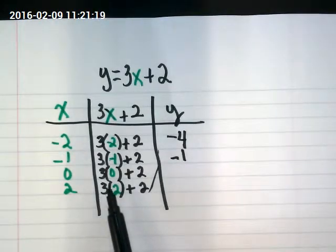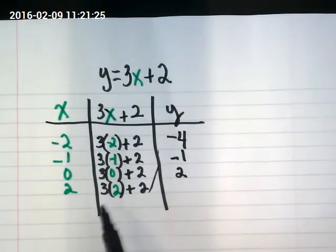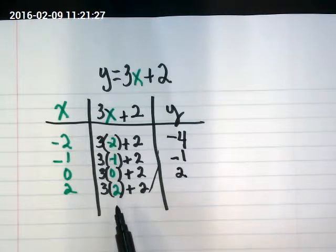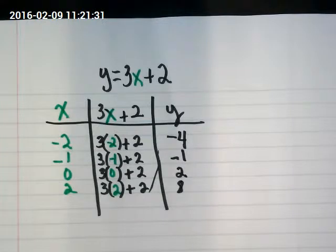3 times 0 would be 0. Plus 2 would just be 2. And then 3 times 2 is 6. Plus 2 would be 8. So as you're working today,